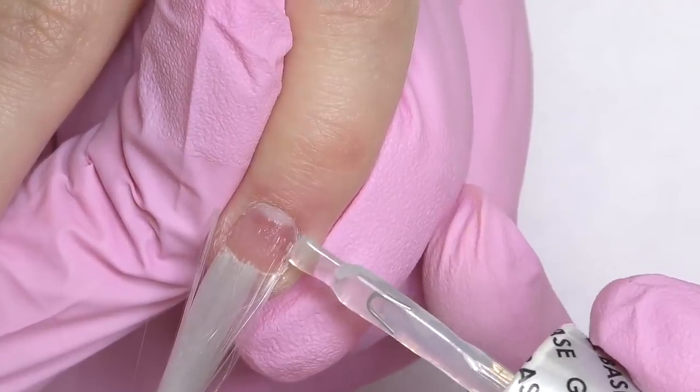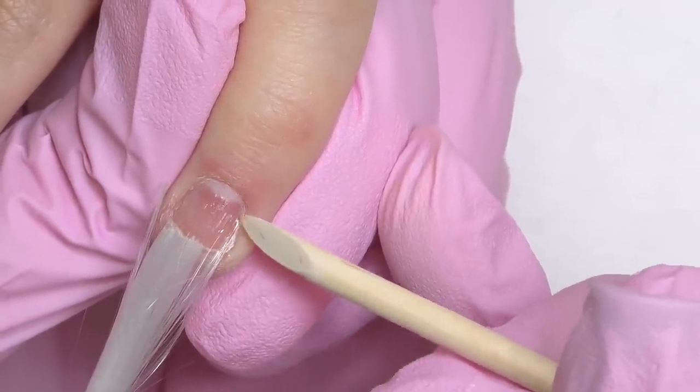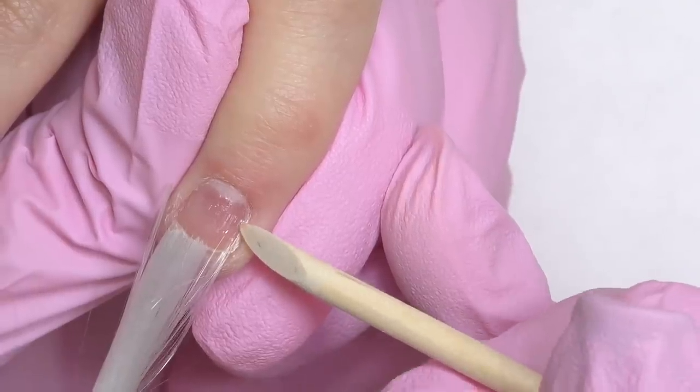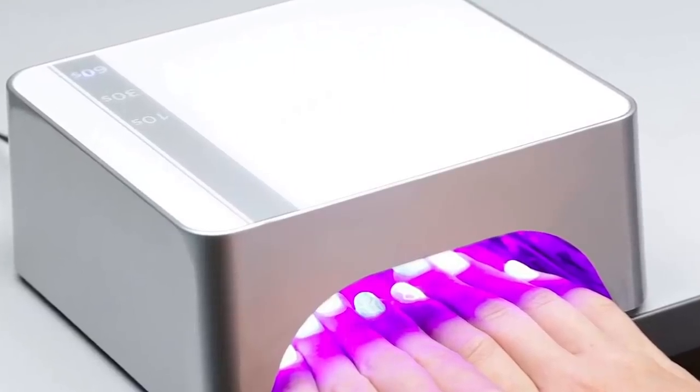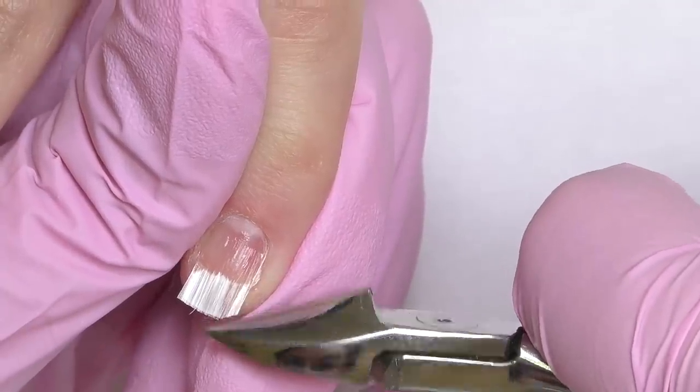So we should be careful by applying that and we need to make sure we are not touching the skin. That's why I'm adding this base coat more and more to the sides because we need to cover the entire surface. Then cure for 30 seconds in LED and then my favorite moment, we cut the links with nippers.